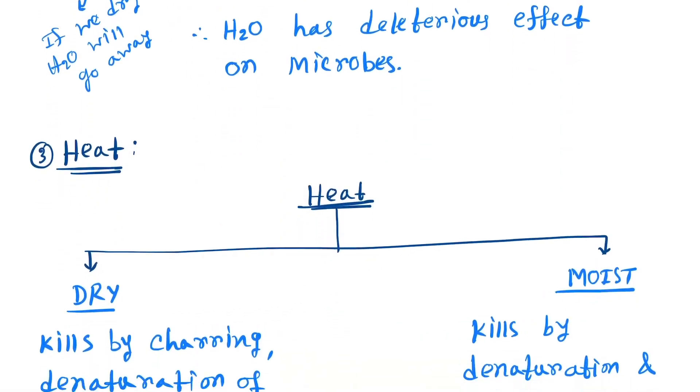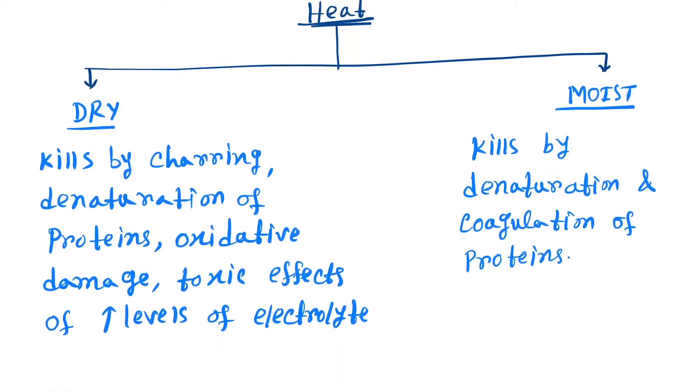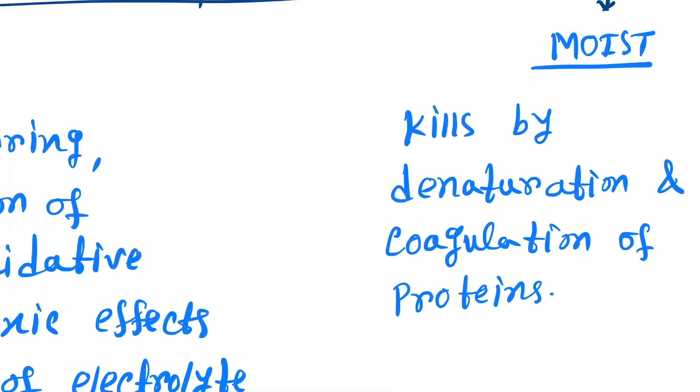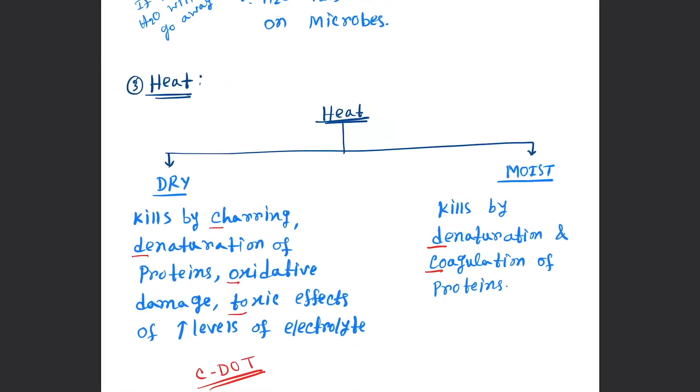Now heat. Heat is of two types: dry heat and moist heat. Dry heat kills by charring, denaturation of proteins, oxidative damage, and toxic effects. You can remember a mnemonic: C dot. Moist heat kills by denaturation and coagulation of proteins.